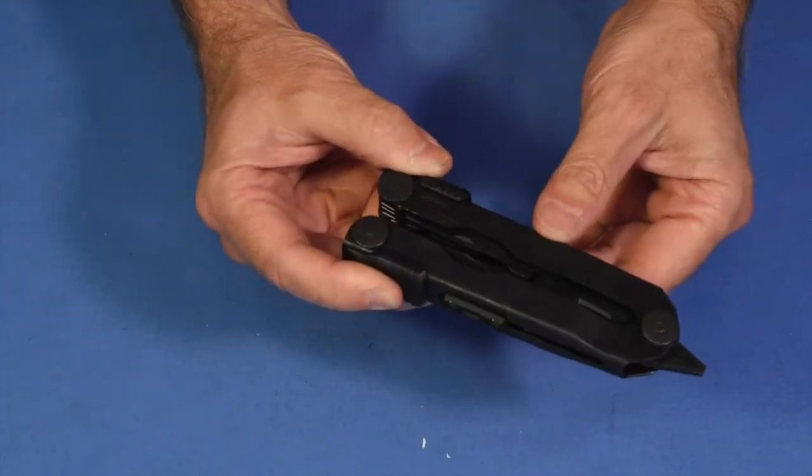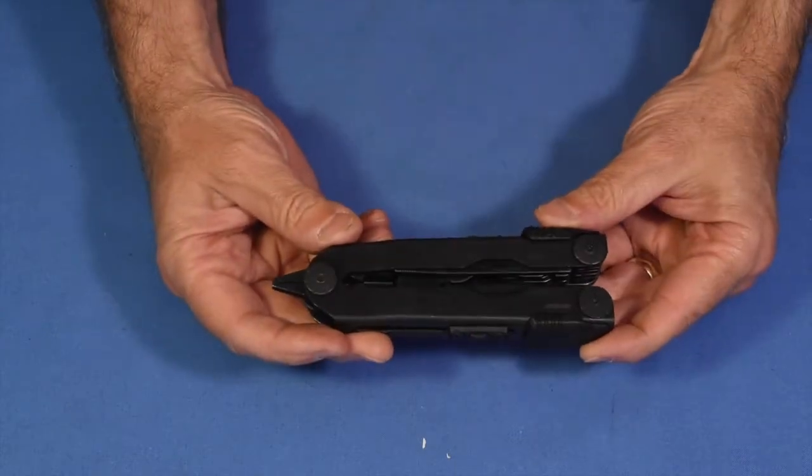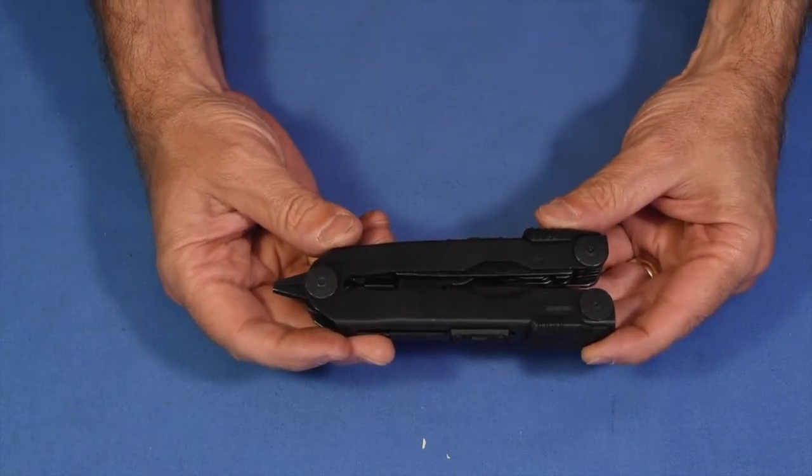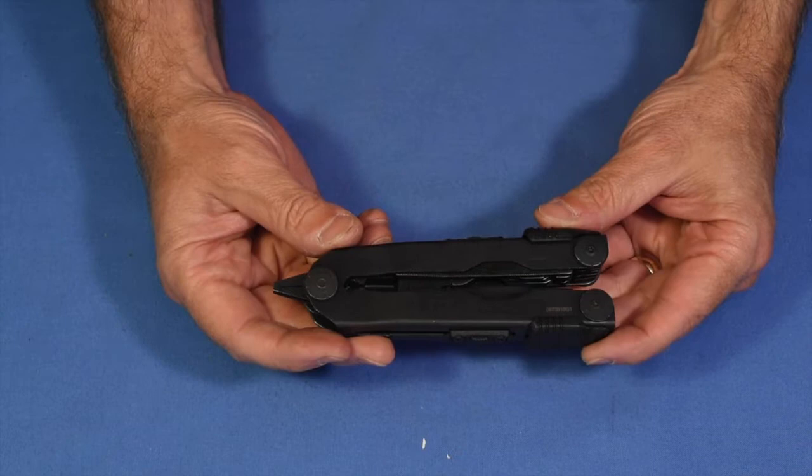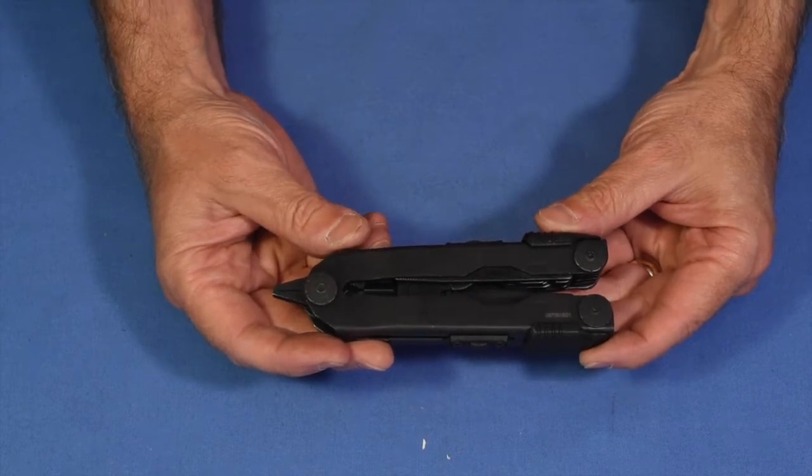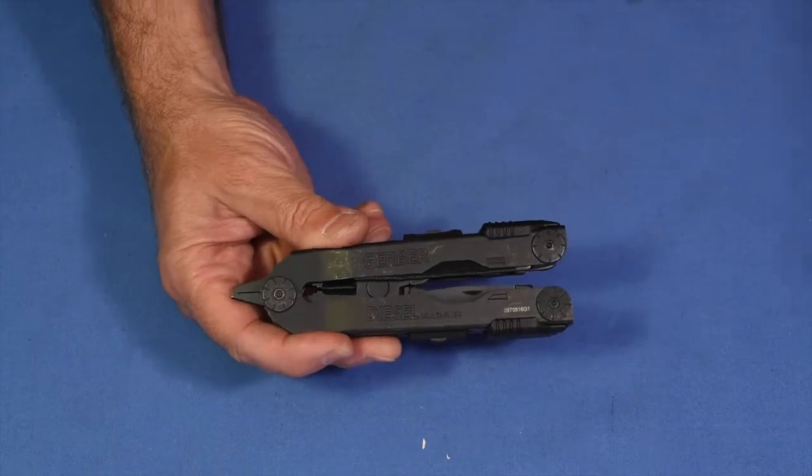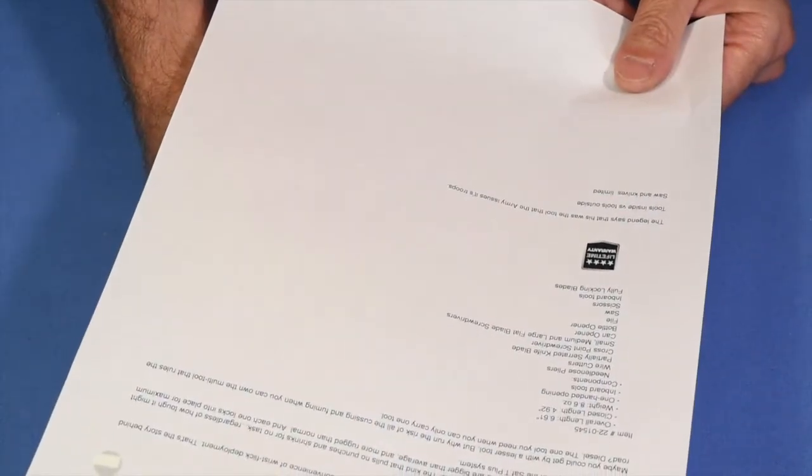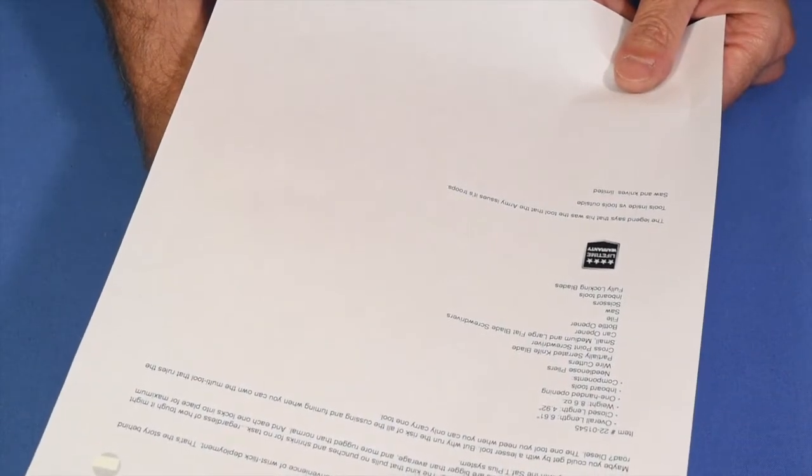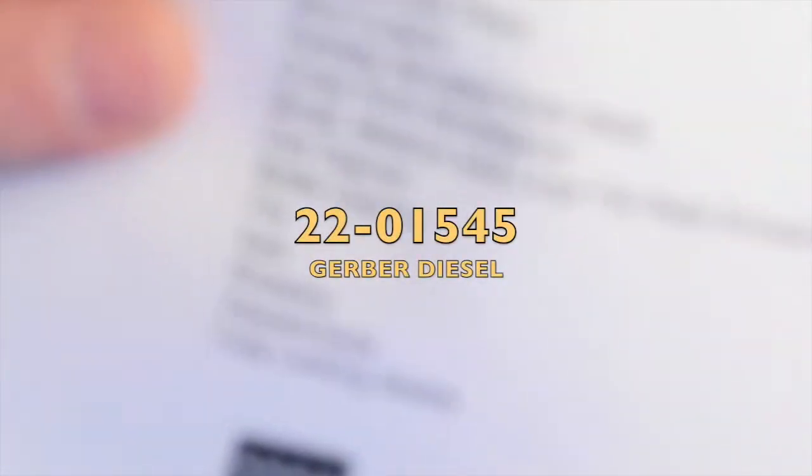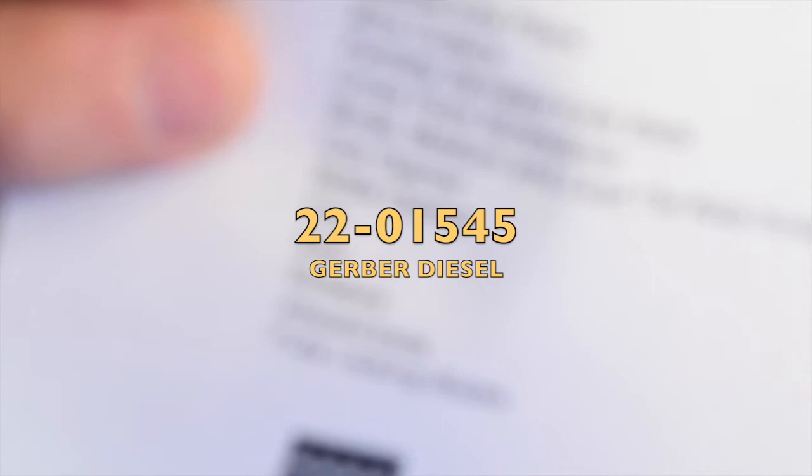Let's get this thing. There it is. It's the Gerber Diesel Multiplier. And it's the model 22-01-545. I know. You couldn't see all that, but I could.